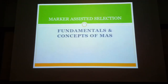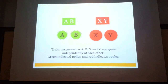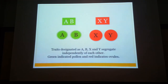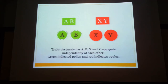For this module we will focus on the fundamentals and concept of MAS, marker assisted selection. In the conventional scheme of things, breeders would start off with two varieties. You cross them — A and B represent the pollen grains, X and Y represent the ovules. You have a donor plant donating the pollen and a recipient plant receiving it. Then you develop your fruits and get your seeds.